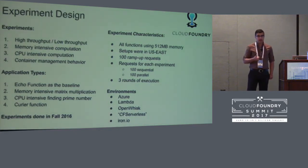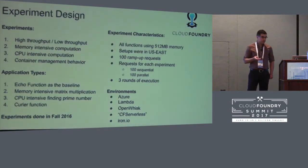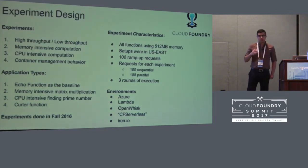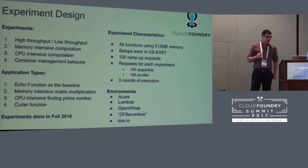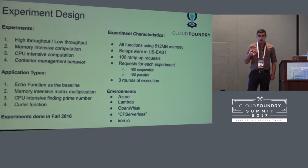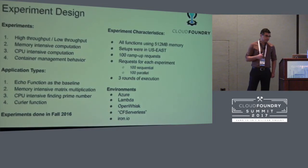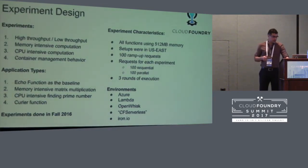Full disclosure: the data I'm going to talk about is based on results collected during fall 2016. Results may have changed since. For the experiments, we set up all functions deployed to all platforms — AWS Lambda, Azure Web Functions, Iron IO, our own CF serverless instance, and OpenWhisk (IBM's) — giving them all 512 megabytes. We set all of them up in US East, except OpenWhisk which is primarily available in Dallas. We launched 100 ramp-up requests to warm up the platform, then ran another 100 requests to collect data, in three rounds of execution.